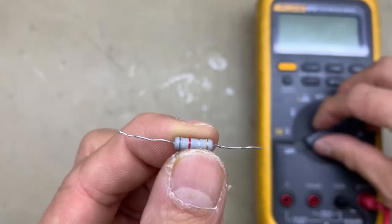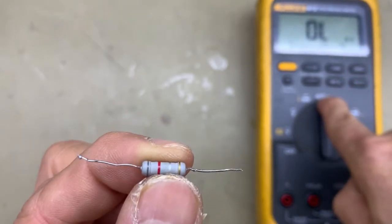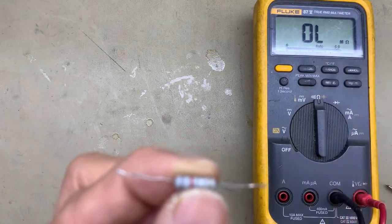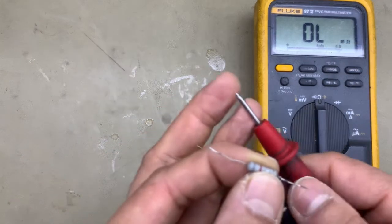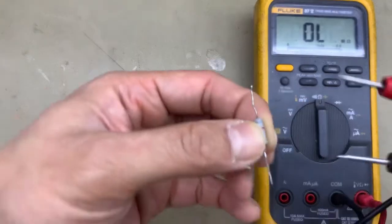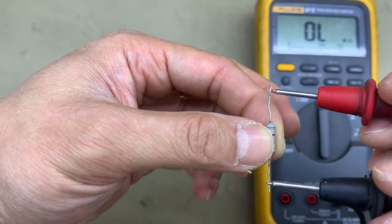First, let's calibrate our multimeter here with this resistance test. As we can see, there is mega ohms, it means resistance test. Let's check. We can put the test probe here.